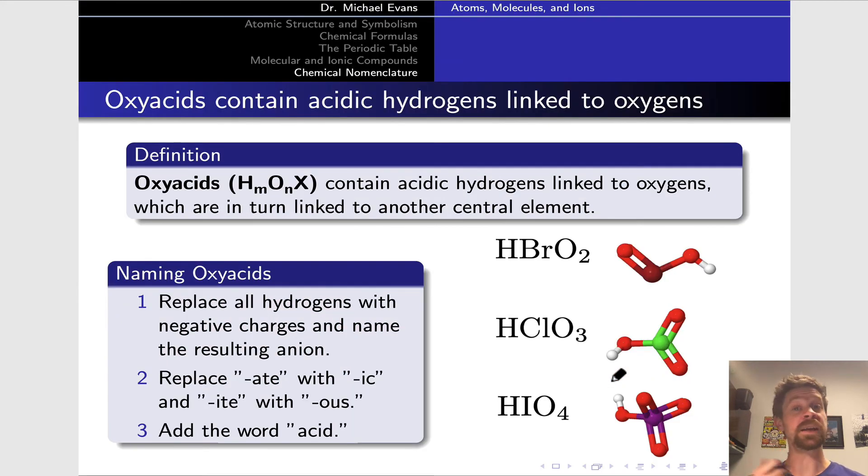Last but not least, I wanted to talk about the oxyacids, which contain hydrogens linked to one of these polyatomic oxyanions that we've seen previously, with a central atom linked by double or single bonds to oxygens. The oxyacids, which have this general formula HₘOₓXₙ, contain acidic hydrogens linked to oxygens, in turn linked to another central element. To name these, we think about the polyatomic anion that would result if we replaced all the hydrogens with negative charges, and then named the anion that would result.